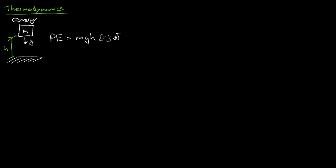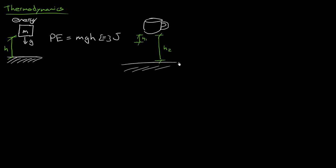This mechanical analogy makes a fair amount of sense: if you raise the mass to a higher height, there's more potential energy. Imagine dropping a coffee mug from a small height versus a large height. If I asked you which height you'd prefer I drop your prized coffee mug onto a concrete surface, you'd say the small height — h1 — because there's less energy involved in that impact.